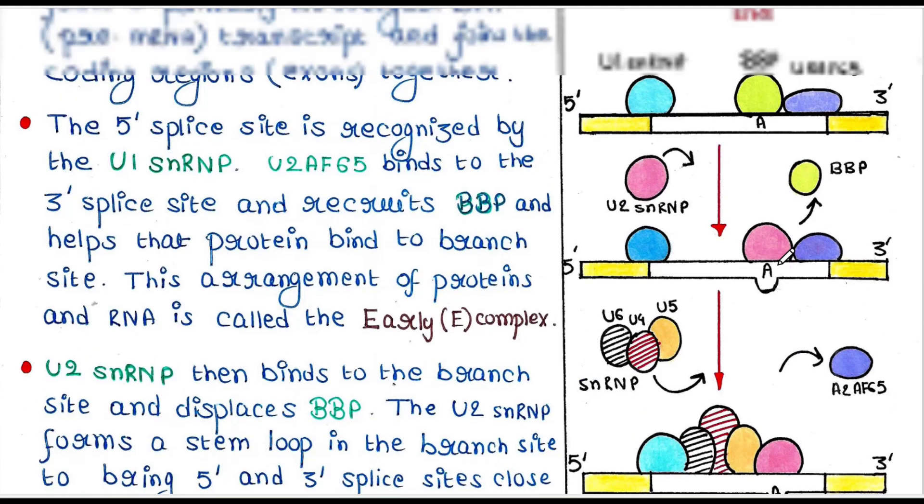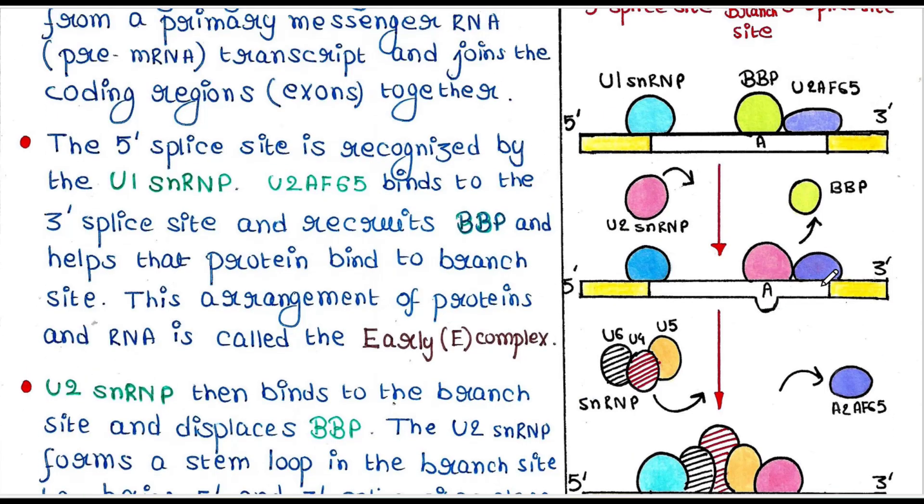In the A complex, BBP is not there. Three components are there: U2 snRNP, U2AF65, and U1 snRNP.